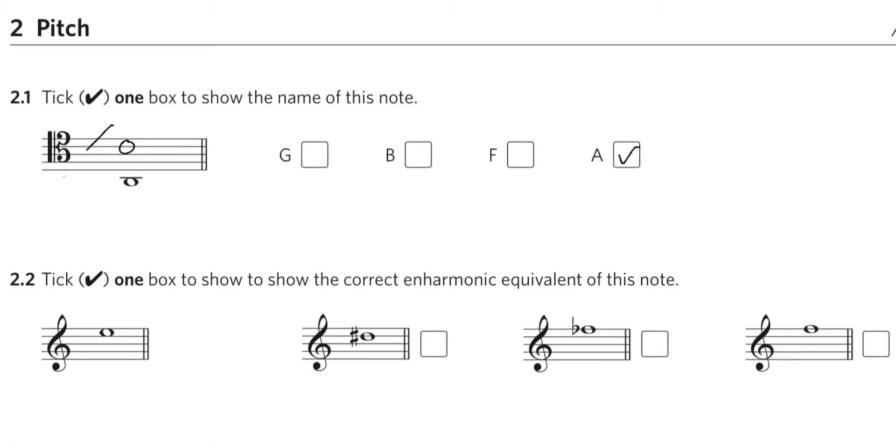The second question asks you to tick one box to show the correct enharmonic equivalent of the given note. Two notes which are enharmonic equivalent are notes which sound the same when you play them, but are spelt differently. For instance, F sharp and G flat are spelt differently, but when you play them, they are the same note.